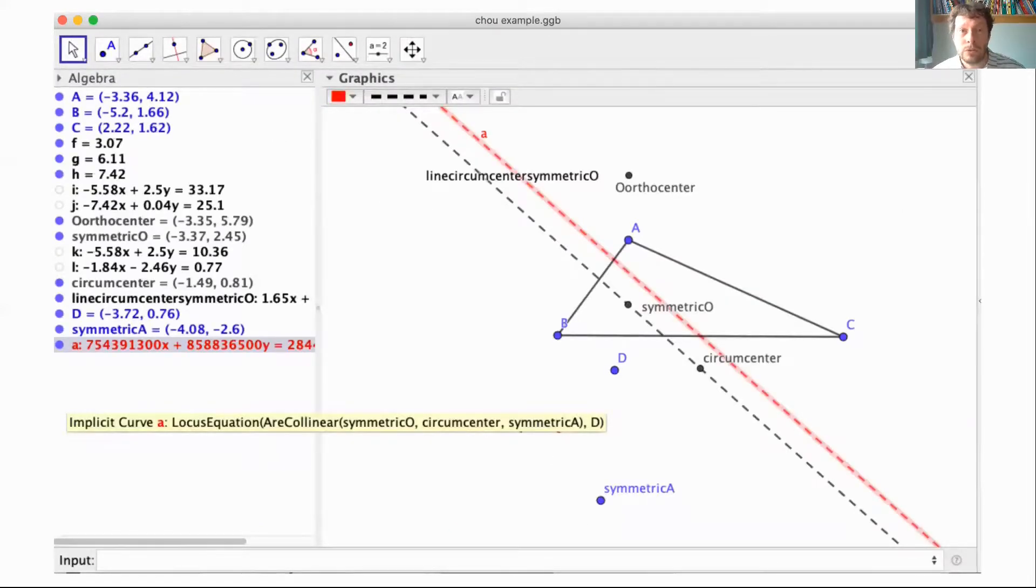There's a third tool, the locus equation, which is different though the mathematical background is similar. We make a construction but instead of the symmetric of A with respect to the midpoint, we build a free point D and consider the symmetric of A with respect to D.